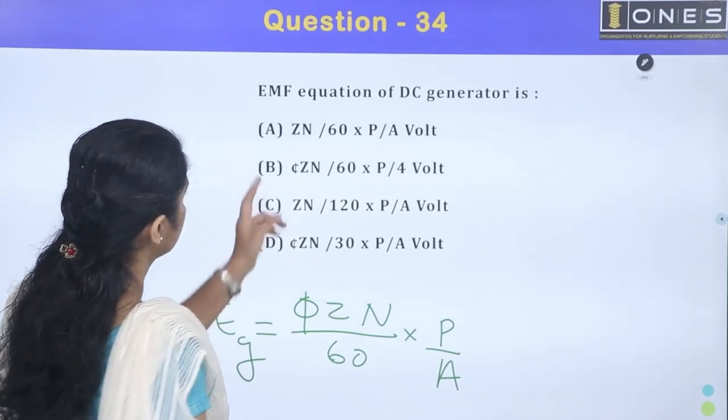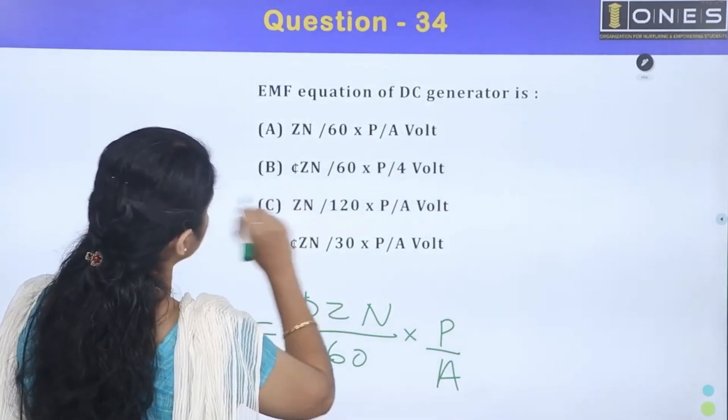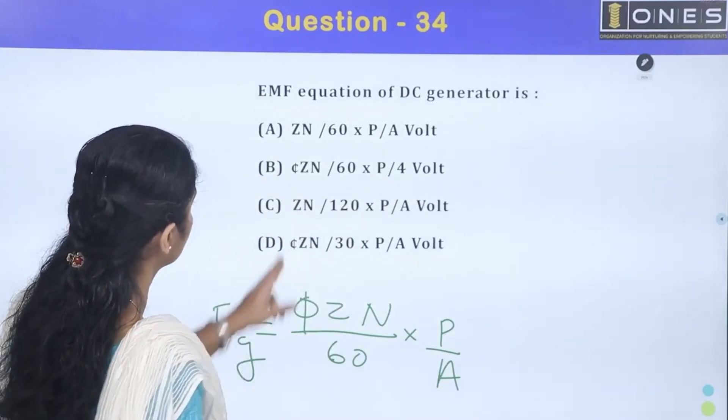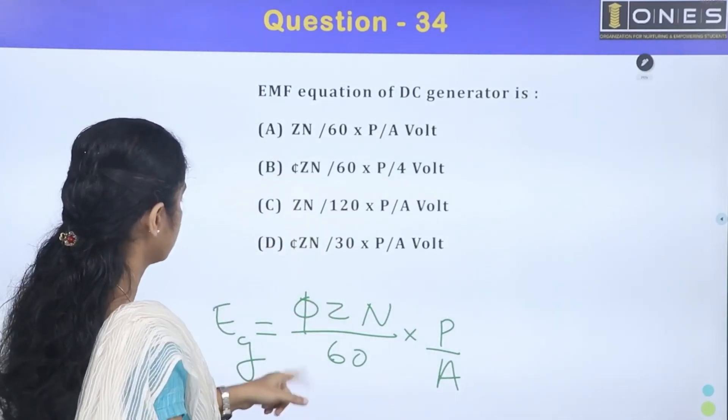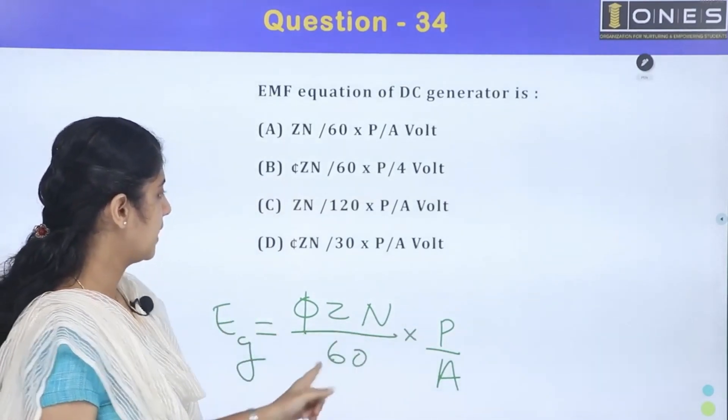This is the option: φZN. This is the correct answer. DC generator φZN into P by A by 60.